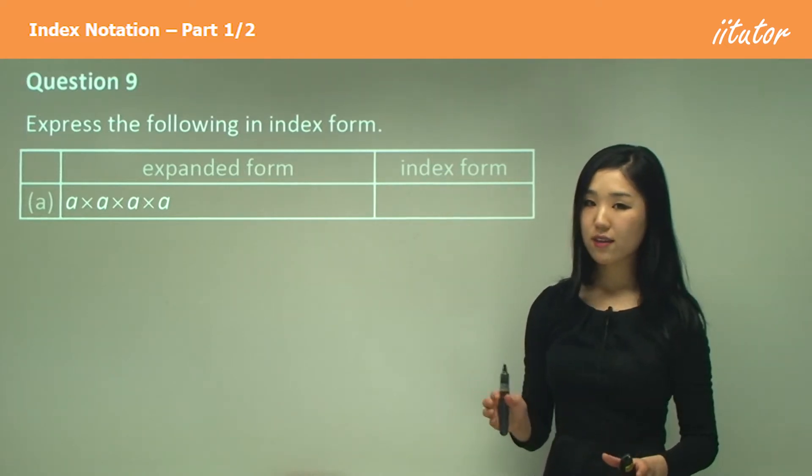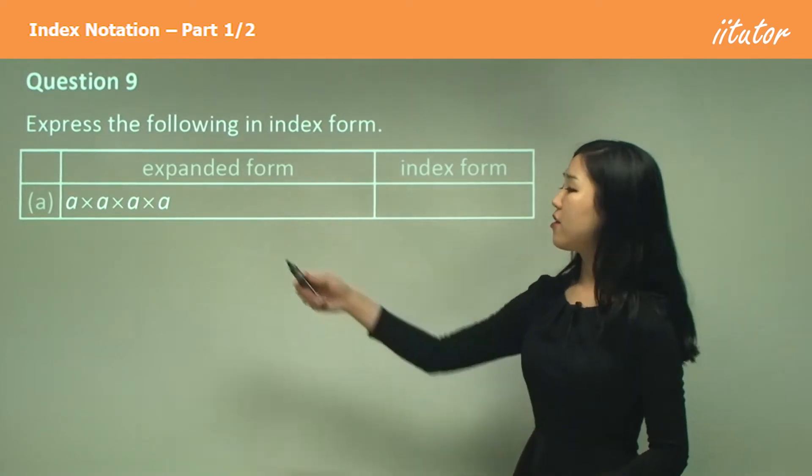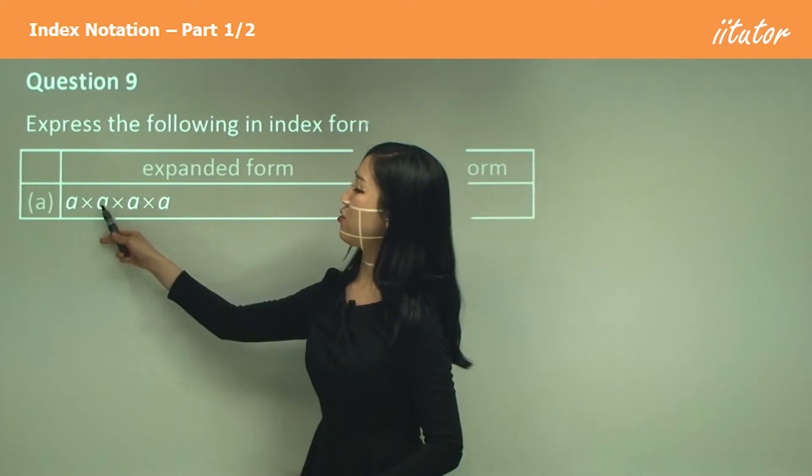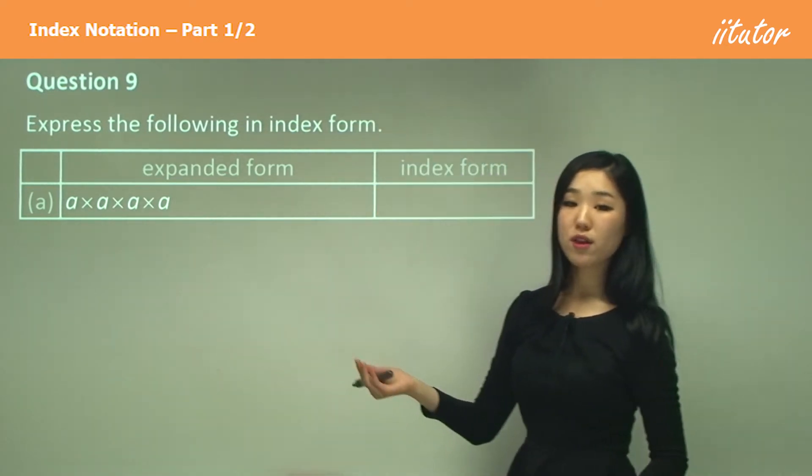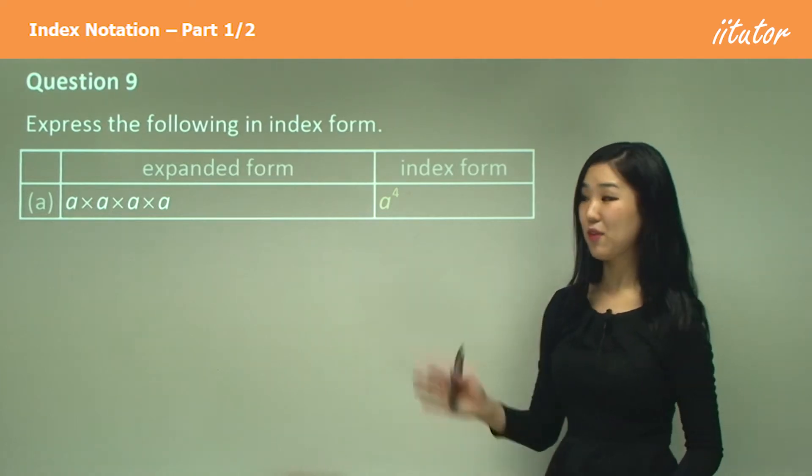All you need to know is how many of each pronumeral or number we have. So here with a, how many a's do we have? One, two, three, four. So all we need to write is a to the power of four because there's four lots of a's. That's all we're asked to do.